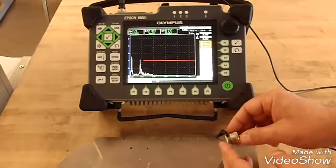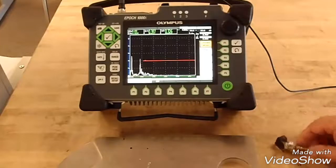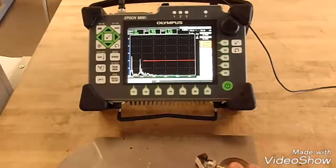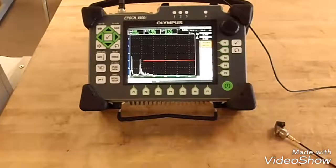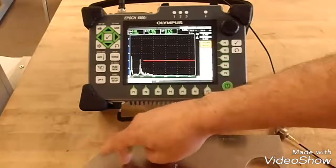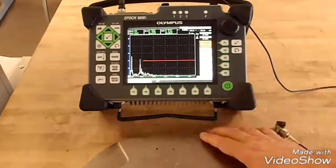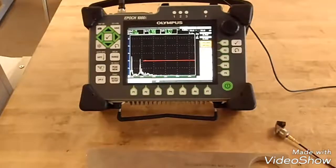The first thing you want to do is get a cal block. This is a IIW type 2 with the 4 and the 2 inch radius. The first thing you want to do is come to your basic display.